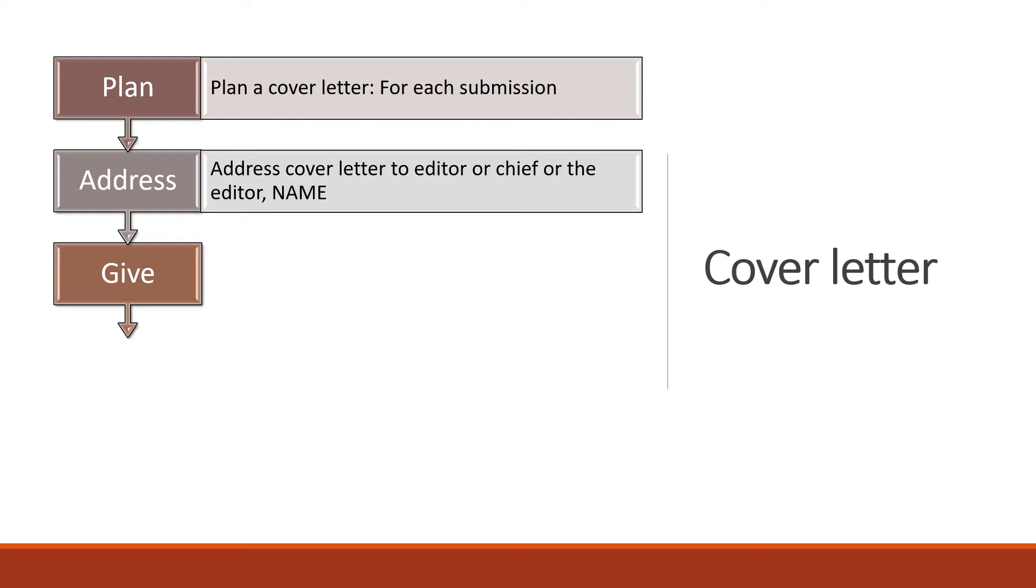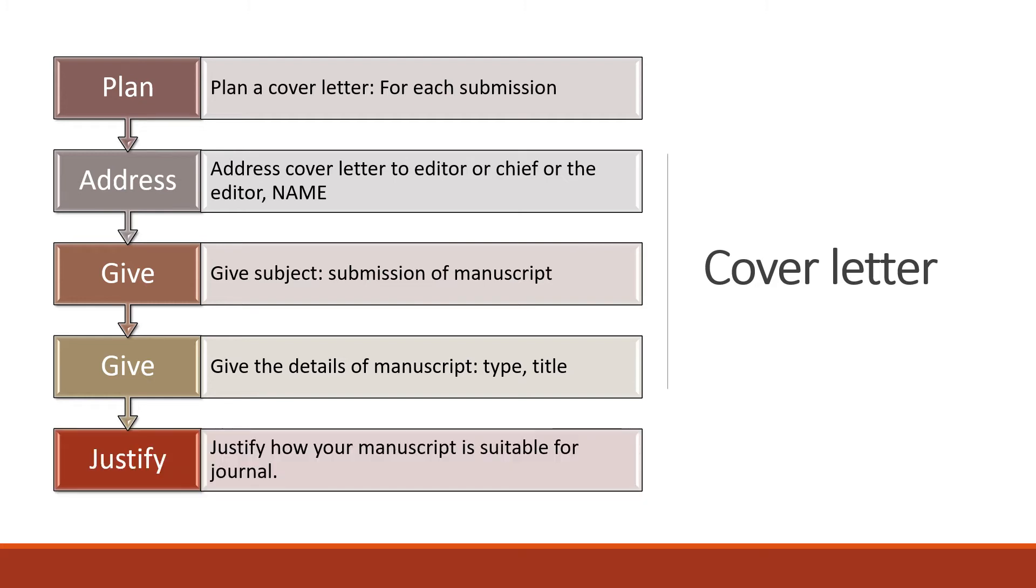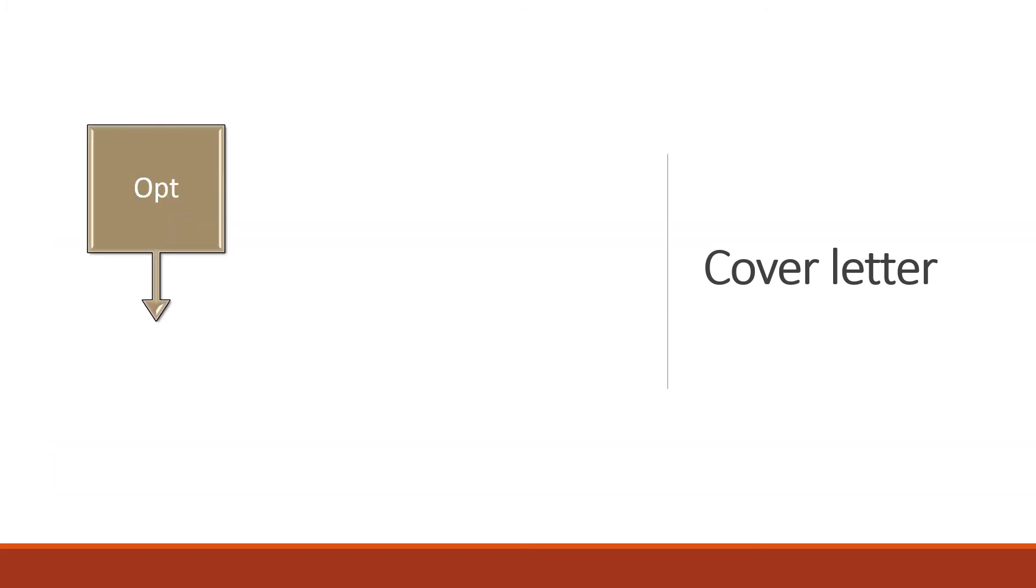Give the subject: submission of manuscript. Then give the details—you are submitting the manuscript with the type and title of manuscript. Then, in a paragraph, most journals require that you justify how your manuscript is suitable for the journal. Rationality and novelty are also sometimes required, so you mention that in just one paragraph, three to four lines.